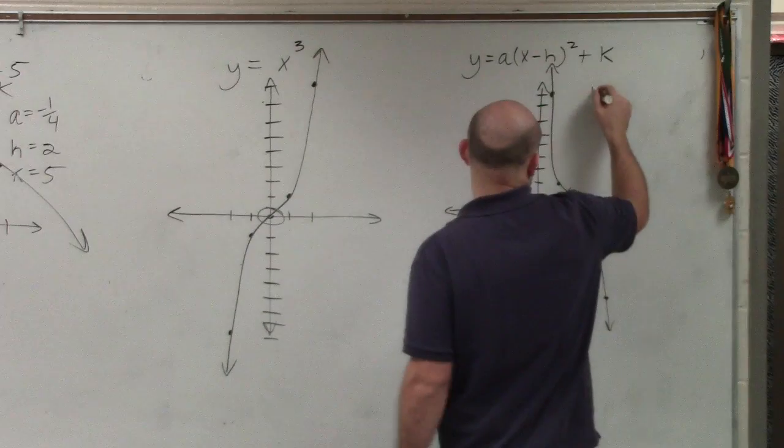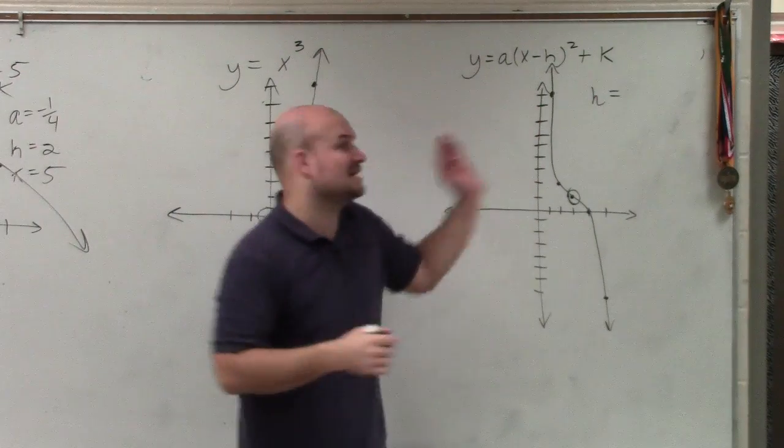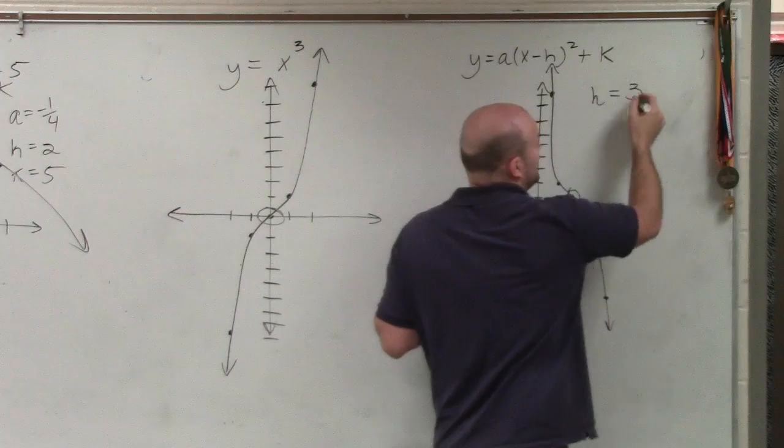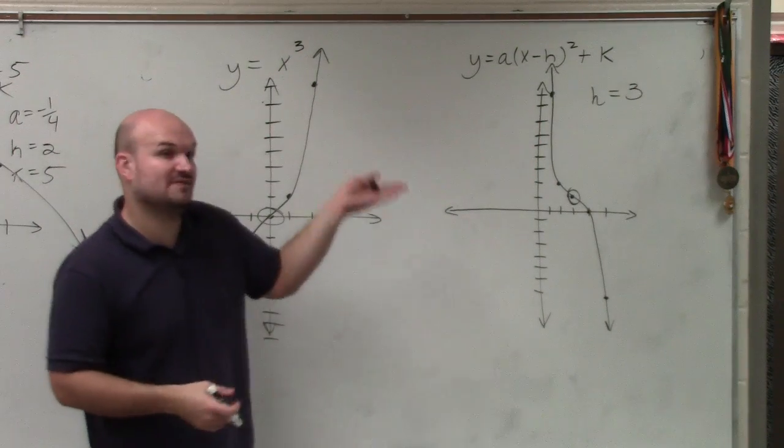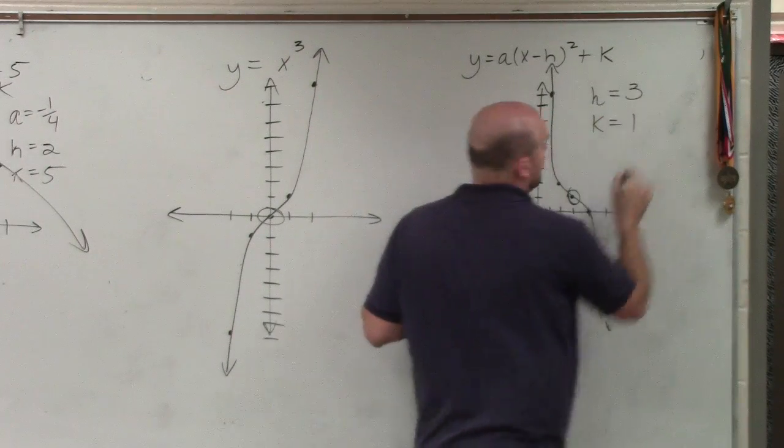So if it's shifted to the right, that means that's the value of h. Since it got shifted to the right, that's going to be 3. Then you can see it also got shifted up, so k is equal to 1.